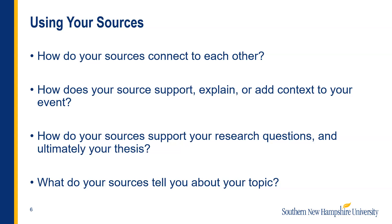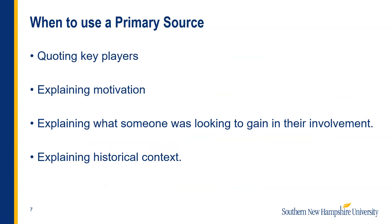You are answering why all the little events you described in historical context led to your event. When should you use a primary source? When you're quoting a key player in an event, when you're trying to explain the motivation behind a person's involvement, explaining what someone was looking to gain in their involvement, and generally just explaining historical context. When you need an exact quote or piece of information, the primary source will work best. For example, if I'm discussing how a main player handled the situation or discussing their speech, citing it gives the audience proof and backs up my thesis.